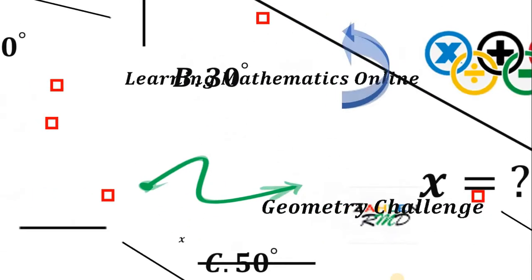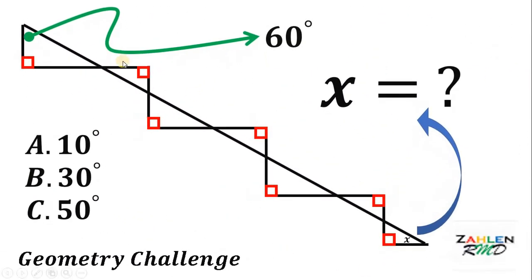So here's our given. We have a straight line and we have 1, 2, 3, 4, 5, 6, 7 right triangles.